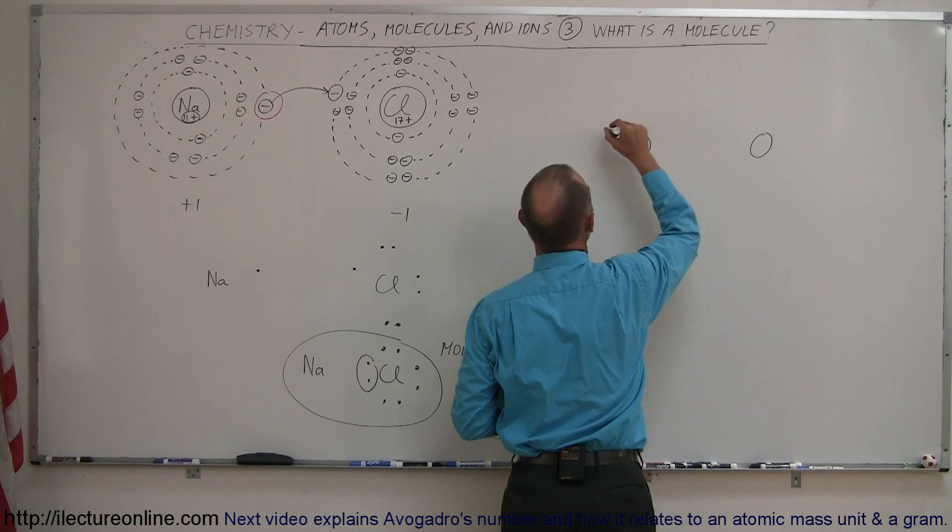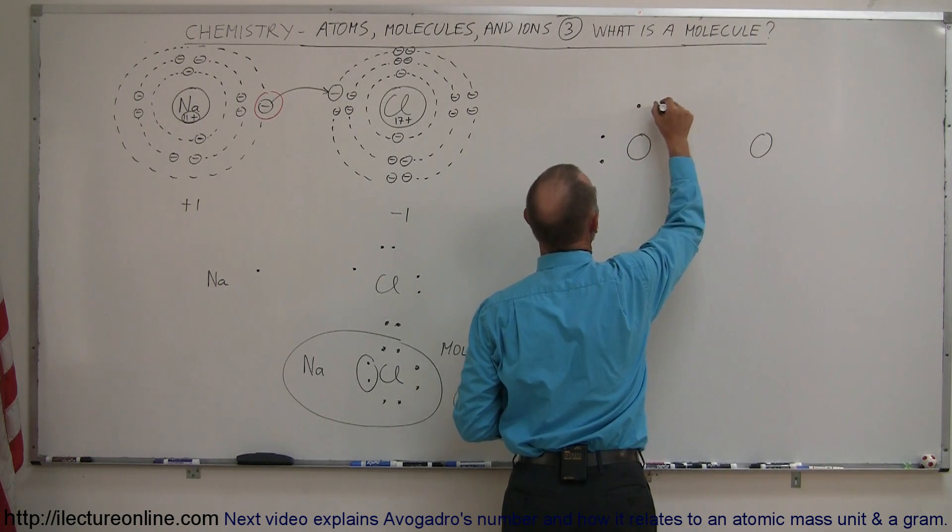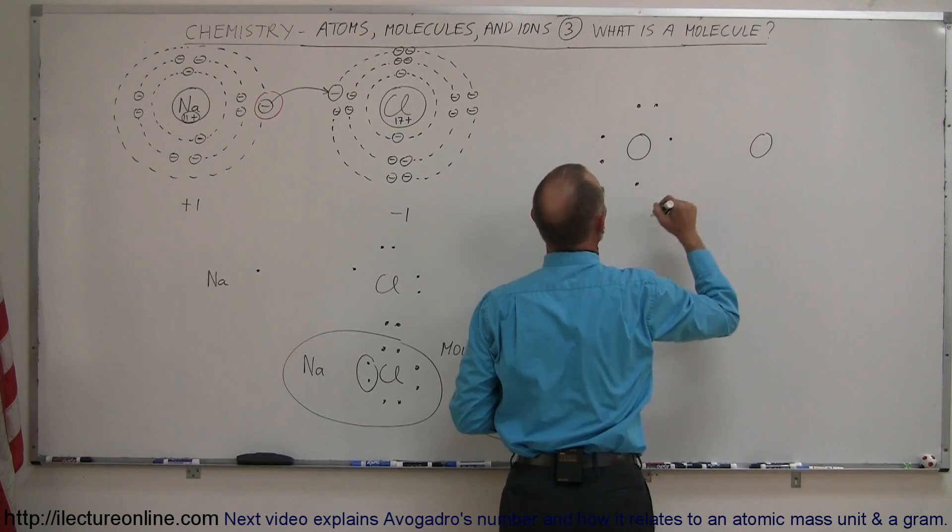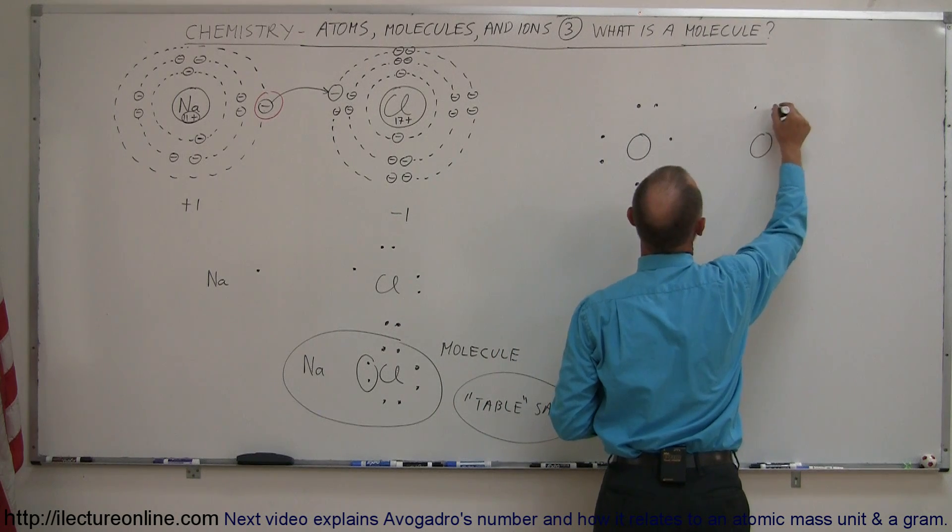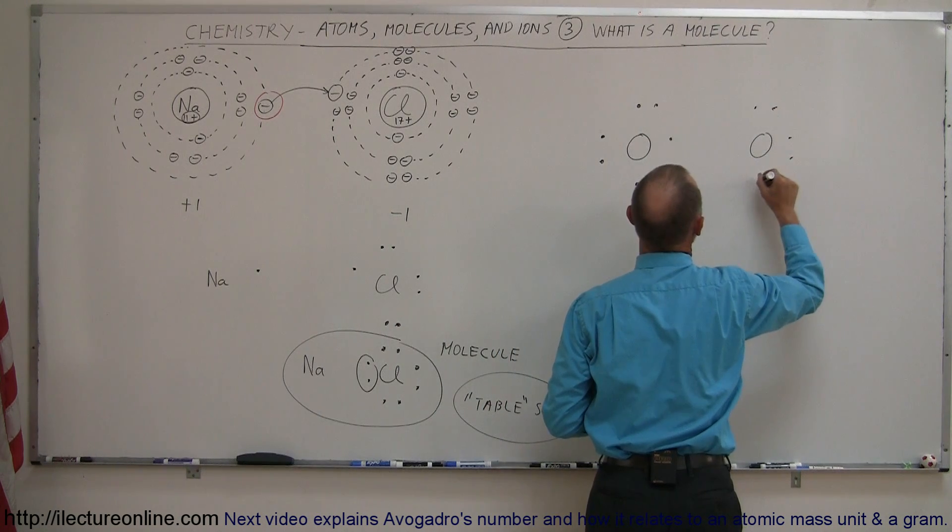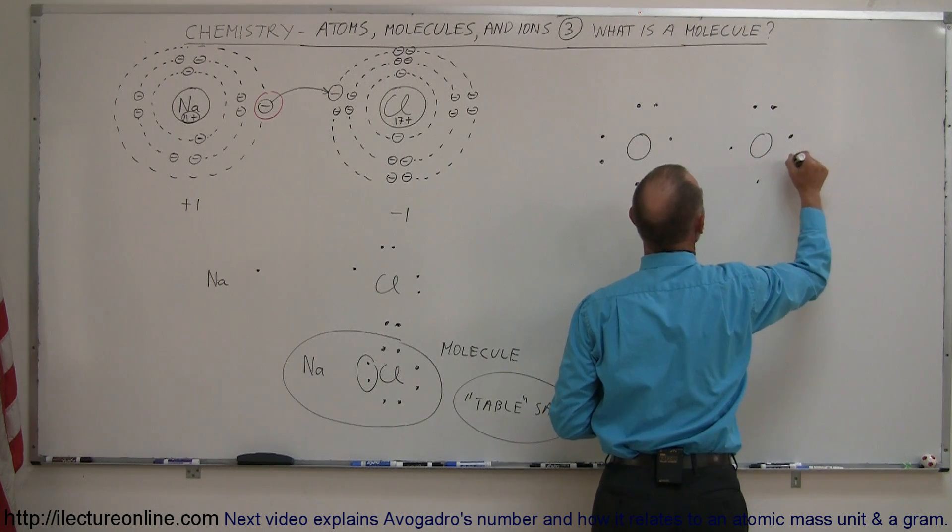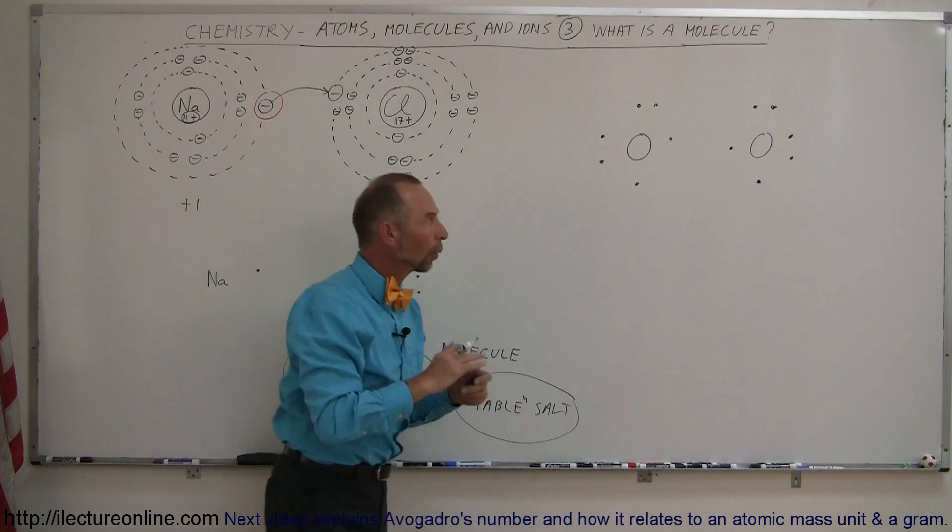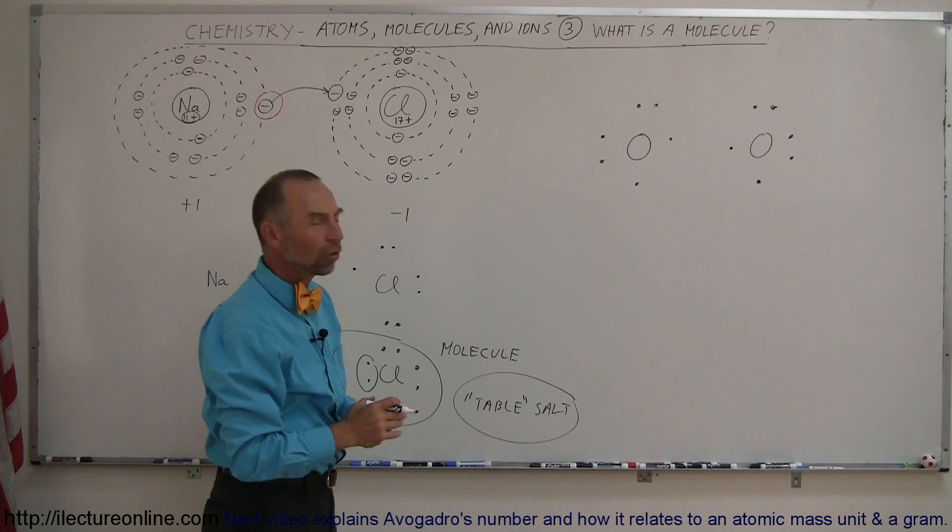So let's say we have one electron here, one electron there, so three, four, five, and six. So we have one, two, three, four, five, and six. Notice that both oxygen atoms would like to have eight electrons in their outer orbit, or I should say their outer energy level, or their outer shell, and there's only six.